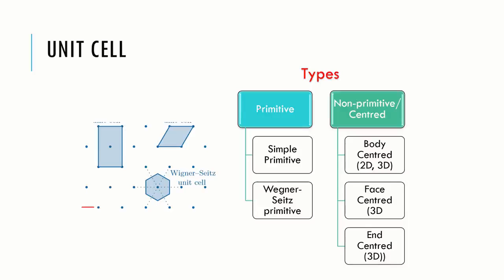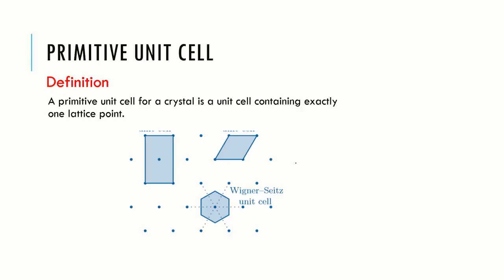A primitive cell may be simple primitive or Wigner-Seitz primitive, and a non-primitive one can be body center, face center or end center. A primitive cell for a periodic crystal is a unit cell containing exactly one lattice point. For instance, here this is a unit cell and this is a primitive unit cell containing one lattice point at each of its corners. The hexagonal shape formed here is also a unit cell but it contains only one lattice point at its center. It is a Wigner-Seitz unit cell.